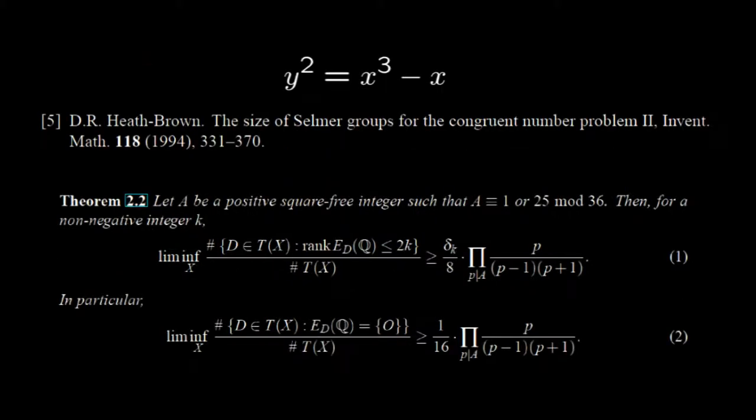One of the earliest known examples of elliptic curves E with a positive proportion of square-free integers d such that rank of twists being 0 is the elliptic curve given by y² equals x³ minus x, proved by Heath-Brown in Reference 5 in 1994.